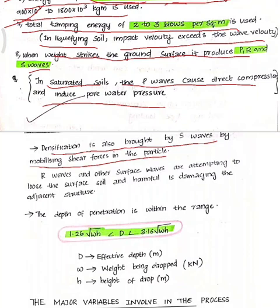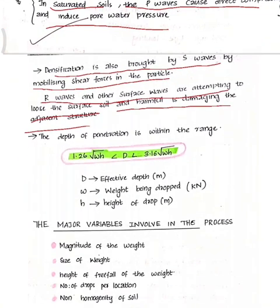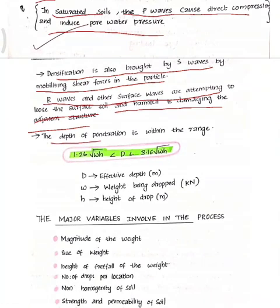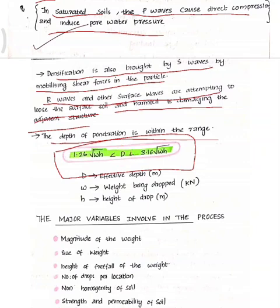The depth of penetration is within the range: 1.26√(WH) < D < 3.16√(WH), where D is the depth of penetration, W is the weight being dropped in kg, and H is the height of drop.